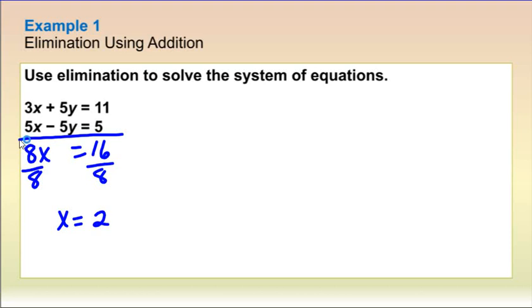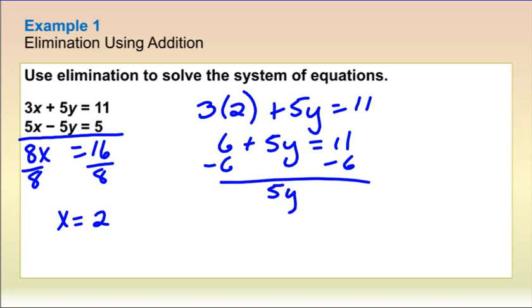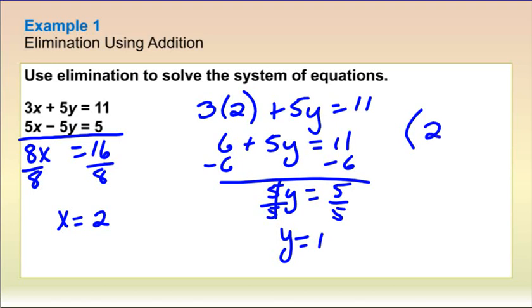Now that we know x is 2, we use one of the two equations — it doesn't matter which one; you'll get the same answer. I'll choose the first one: 3 times 2 plus 5y equals 11. That gives 6 plus 5y equals 11. Subtract 6 on both sides, giving 5y equals 5. Divide by 5, and y equals 1. So the answer as an ordered pair is (2, 1).